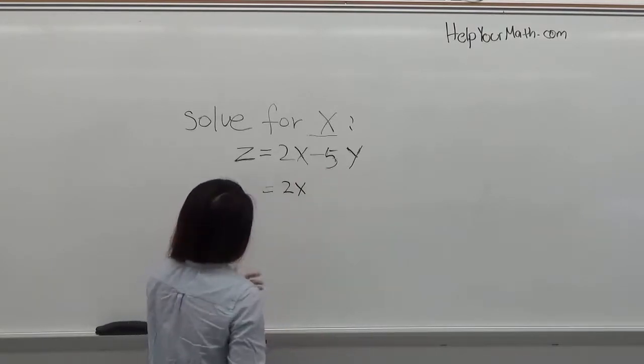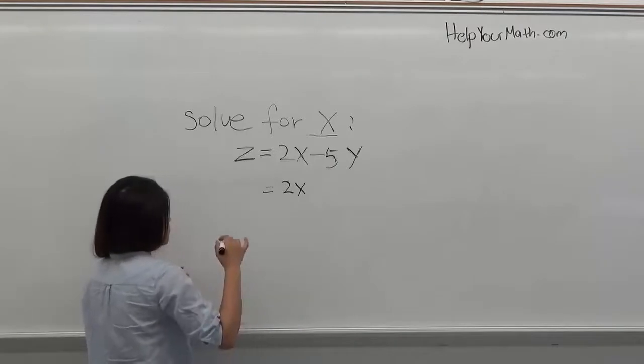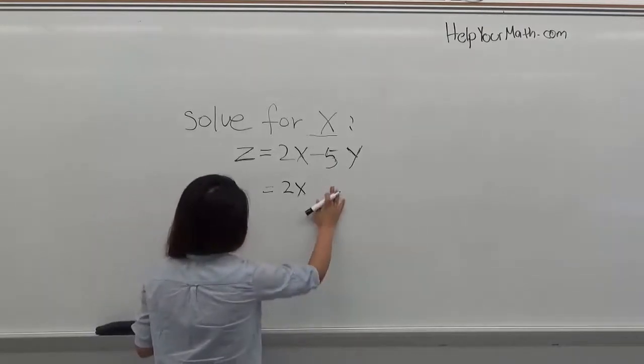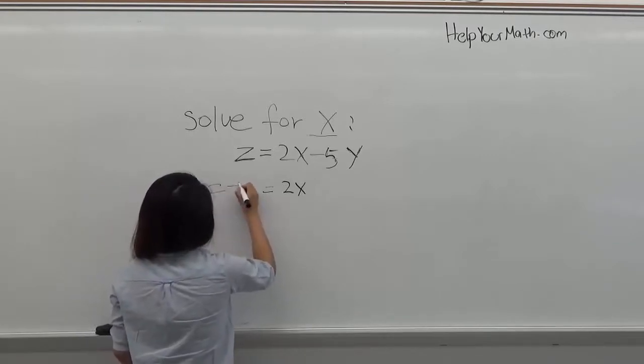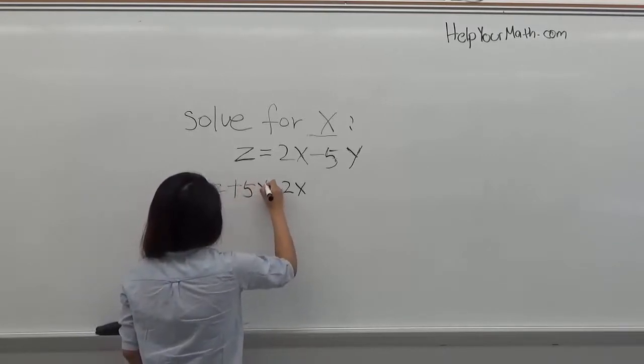But because this is equation, wherever you add something on one side, you have to do on the other side. So you get z plus 5y.